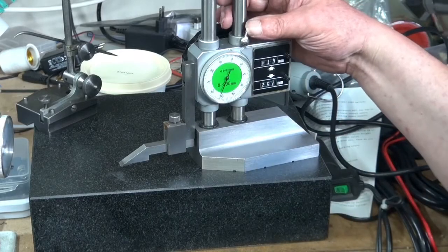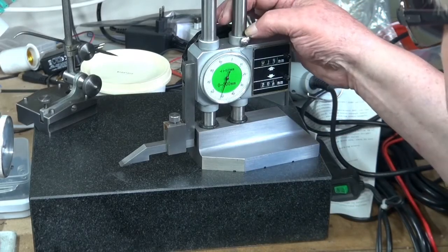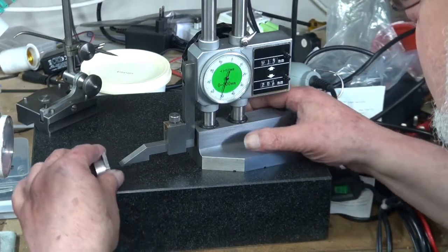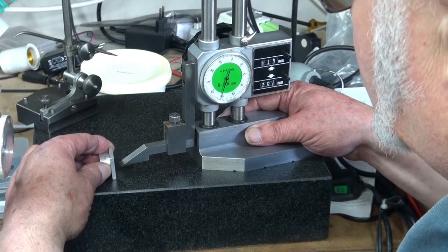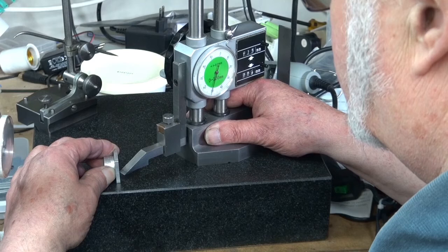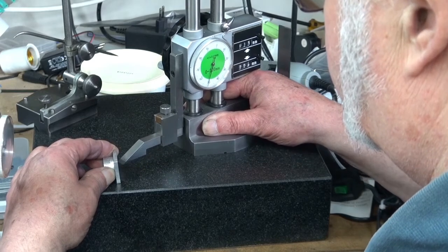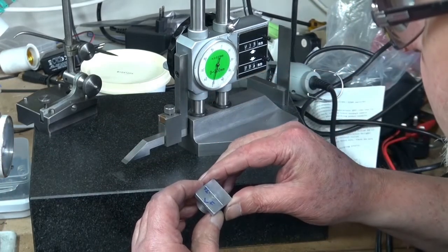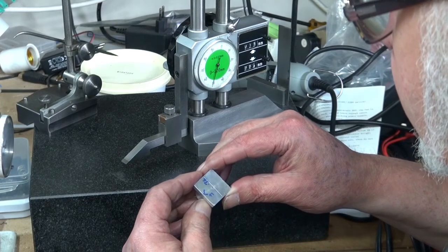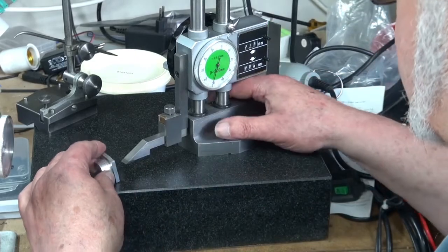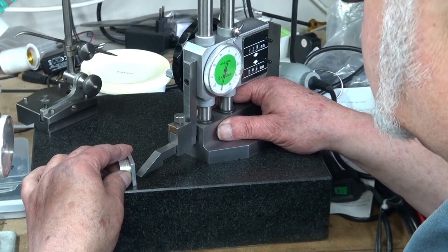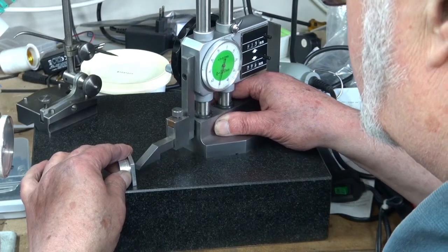So I'll lock that. It doesn't lock very well, that's the only problem with it. And using the tip I'm going to put a scribe line across that. So I'm going to hold that as vertical as I can. Put that on there and across. Now that looks about right. Turn it 90 degrees and once more. There we go.